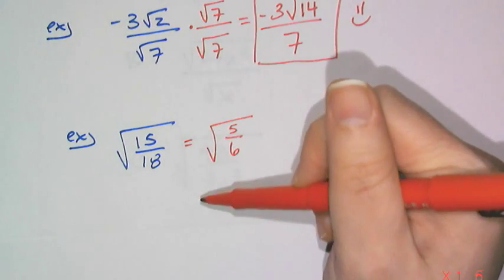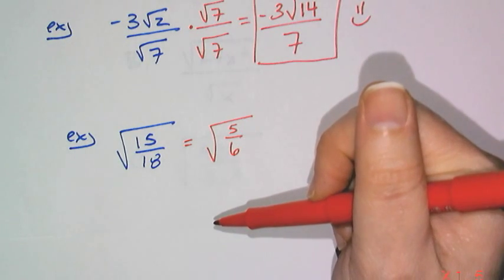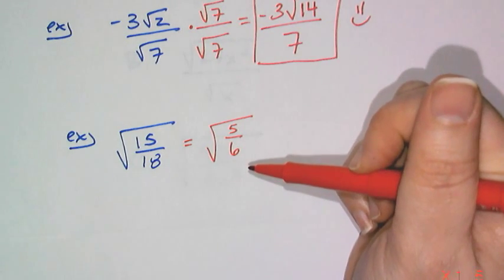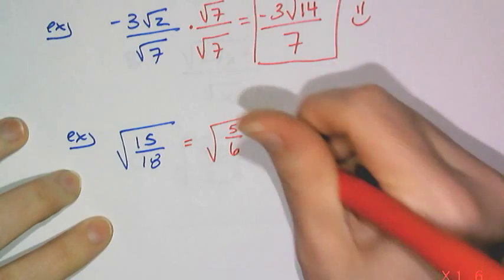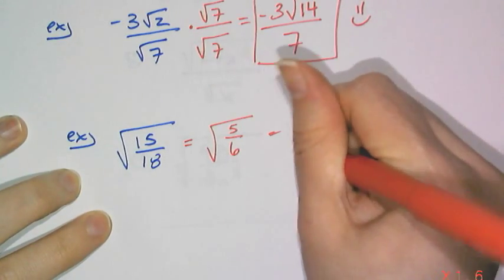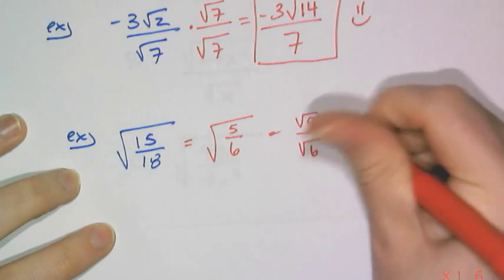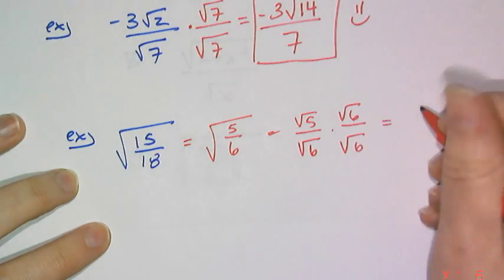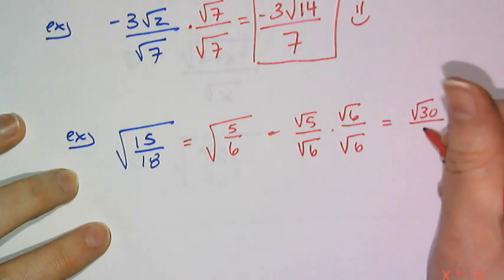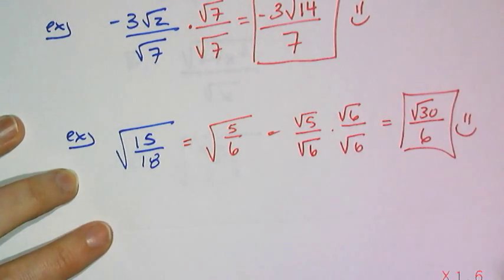And so 15 over 18 is the same thing as 5 sixths. So now I can simplify this. Now I can go ahead and say root 5 over root 6 by the division property, and then multiply the numerator and denominator by root 6, and I end up with the root 30 over 6, which is the simplified version of that.